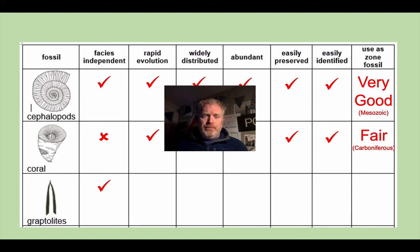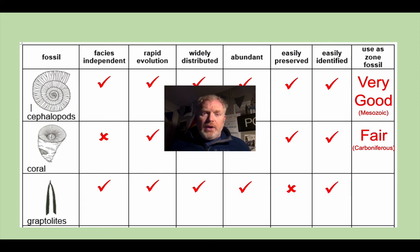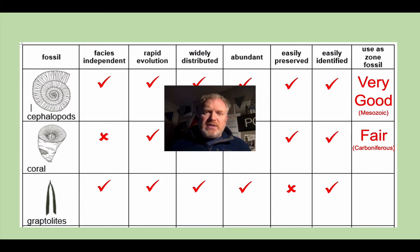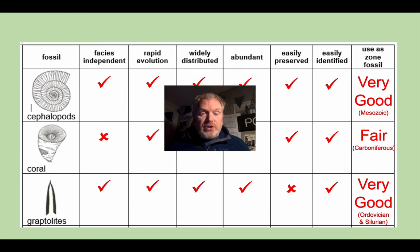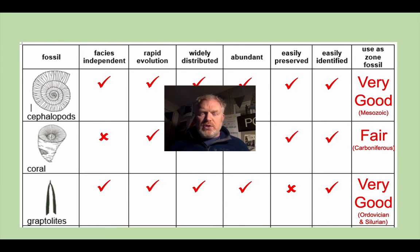Graptolites tick a lot of the boxes. The only one they don't really tick is that they're not easily preserved — they're really quite fragile organisms. We only tend to find them preserved in deep ocean sediments, where there are anaerobic conditions and low energy levels. As a result, as zone fossils they're very good, but in particular for the Ordovician and Silurian periods. It happens that we find a lot of deep ocean sediments of that age, which allows us to use these.